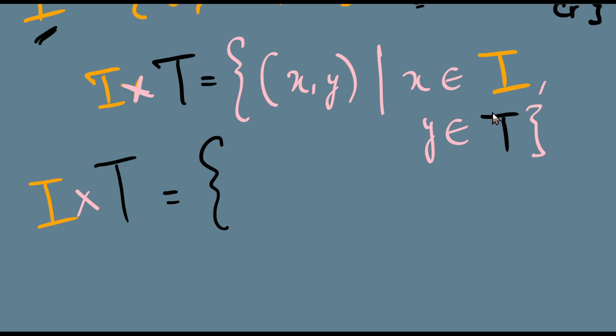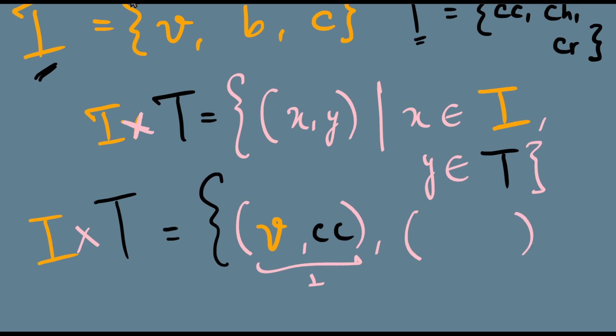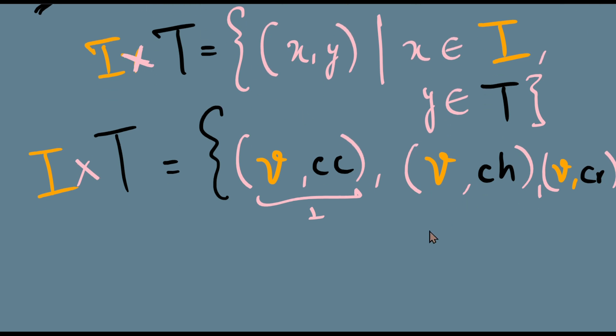All such ordered pairs which obey this property - so maybe I should start from the first element in I. The first element is V for vanilla. Vanilla with my choco chip topping is my first element in I cross T. So this is one element. Another element would be V comma cherry. Then I'll have V comma caramel. And then all these are elements in I cross T.